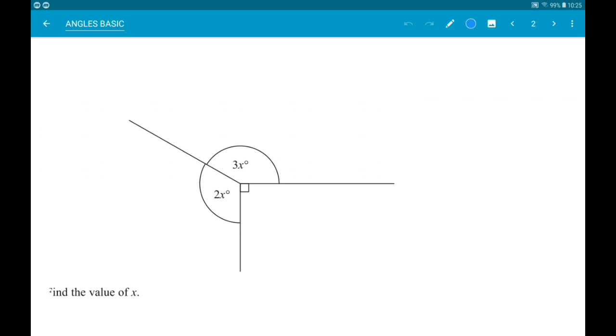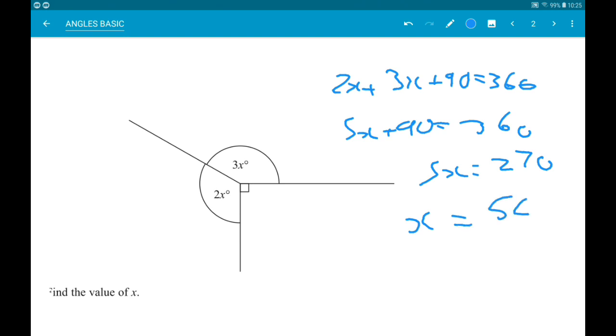Okay then, first up, work out the value of x. So angles around the point add up to 360 degrees. So 2x add 3x add our right angle which is 90 degrees has to be 360 degrees. So 5x add 90 is 360. Subtract 90, 5x is 270. And then finally, divide by 5 and we get x is 54 degrees.